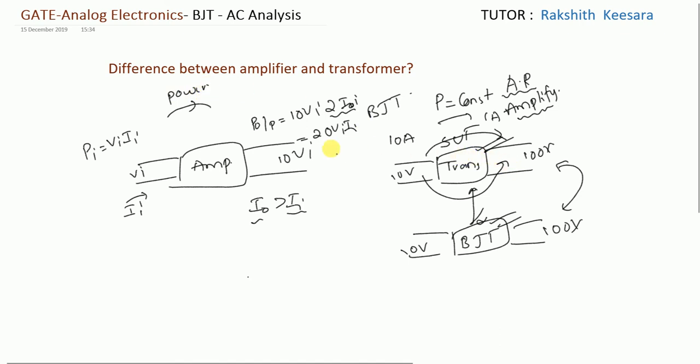In transformer, power is constant, but in amplifier, it is amplifying the power also. If someone asks you that in amplifier voltage is increasing, so parallely current should decrease - that is a wrong concept. In amplifier, voltage may increase or decrease, but current will also increase. Because if you see current gain, it will be beta, alpha, and gamma. Beta will be greater than 1, gamma will be greater than 1, and alpha will be nearly equal to 1.